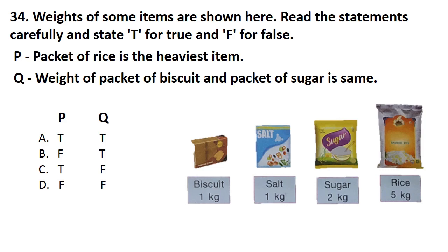Question No. 34. Weights of some items are shown here. Read the statements carefully and state T for True and F for False. Here, P, packet of rice is the heaviest item. And Q, weight of packet of biscuit and packet of sugar is same. Answer is Option C. That is P is True and Q is False.